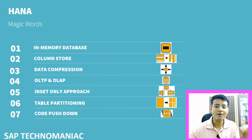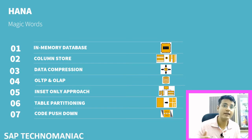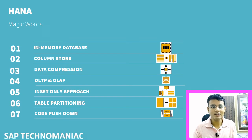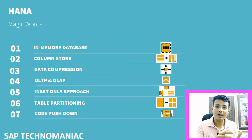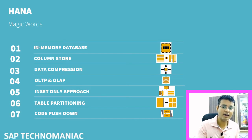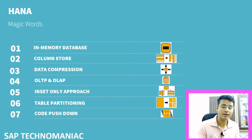In my last video, we discussed about data compression, what is the advantage of data compression and how SAP does data compression. In this video, we will see what is this term called OLTP and OLAP, and how before S/4 HANA we were processing the data using OLTP and OLAP, and now what is the advantage of using HANA so we can do OLTP and OLAP together. Let's get started.